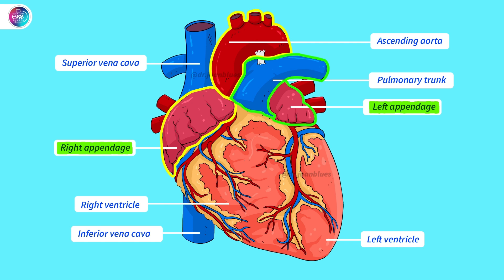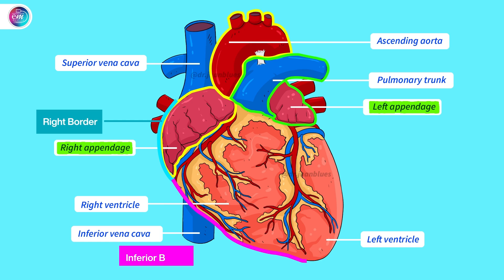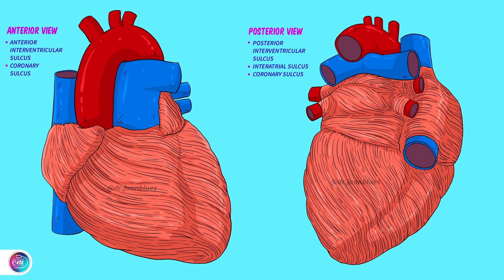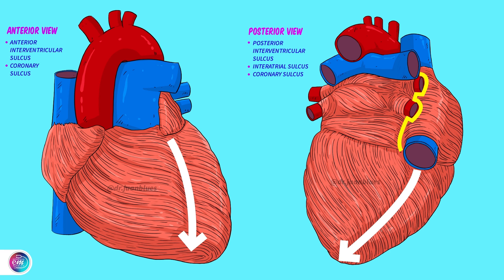Regarding the borders, we can describe four: a right border delimited by the right atrium; an inferior border delimited by the right ventricle; a left border delimited by the left ventricle; and a superior border connected to the appendages and the large vessels. Finally, we will indicate the grooves, or sulci, of the heart. As far as external configuration goes, we can define a set of grooves which function as important anatomical landmarks and generally coincide with the paths of the veins and arteries of the heart. We therefore have an anterior interventricular sulcus, a posterior interventricular sulcus, an interatrial sulcus, and the coronary sulcus.